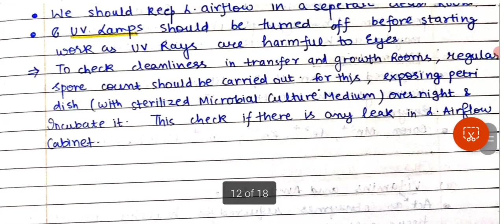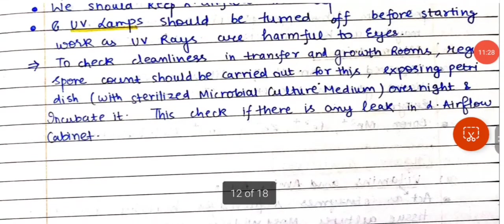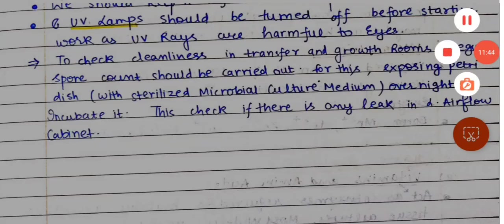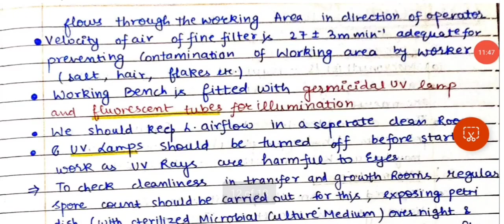To check cleanliness in the transfer or growth room regularly, we can do a spore count. For this, expose a petri dish with sterilized microbial culture medium overnight, then incubate it. If there is a leak in the laminar airflow cabinet, you will get microbial growth during incubation, meaning it is not properly sterilized. This spore count serves as a cleanliness check to confirm whether sterilization is adequate.